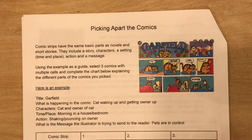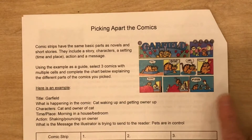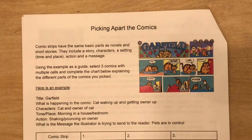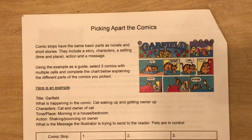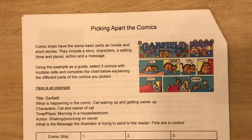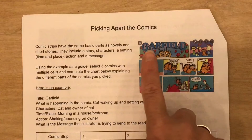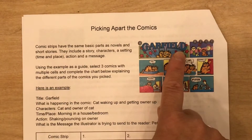Using this example as a guide, I want you to select three comics with multiple cells and complete the chart below explaining the different parts of the comics you picked. So here is an example — you can see Garfield. This is the splash panel.